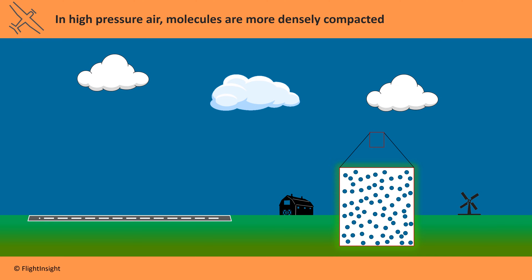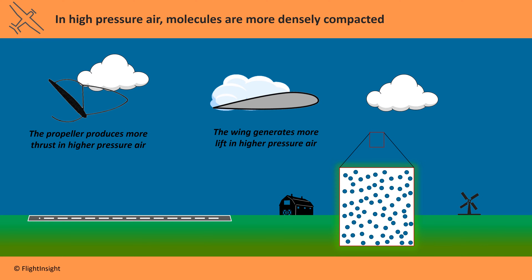Aircraft performance depends on this density. The propeller is more effective when it's pushing more air molecules to produce thrust. The wing generates more lift when it's pushing more air molecules downwards, and the engine produces more power when it has more air molecules going into the cylinders to combust.